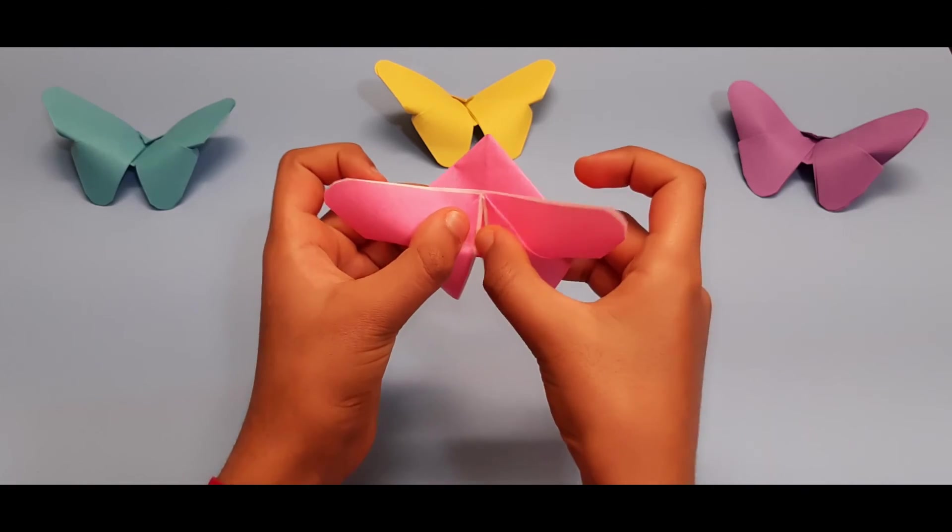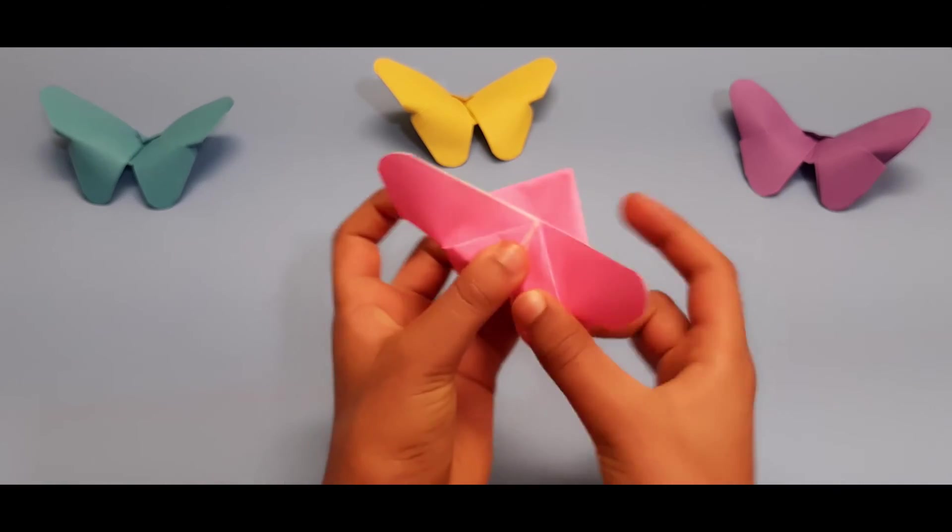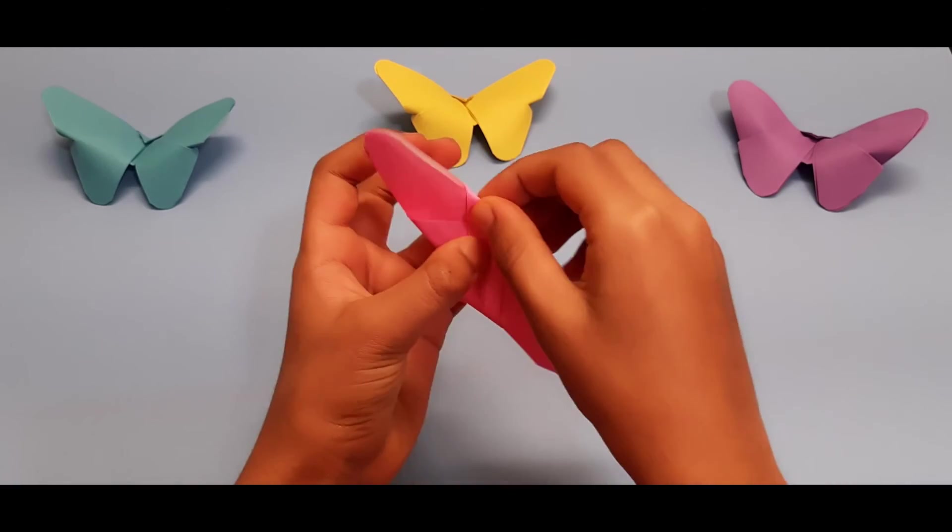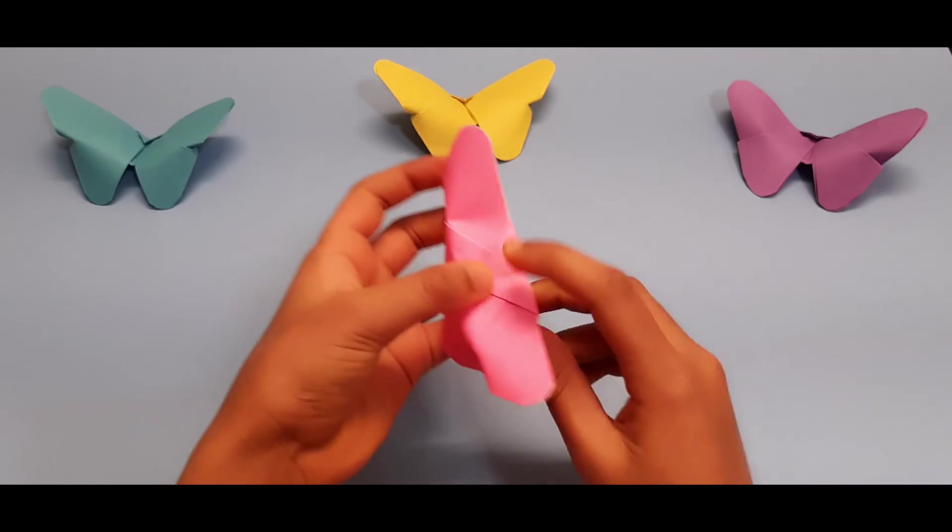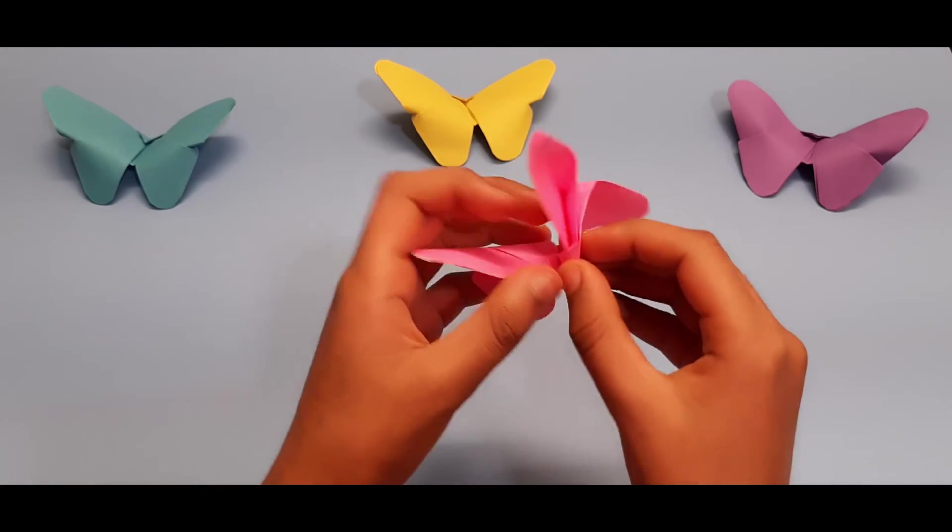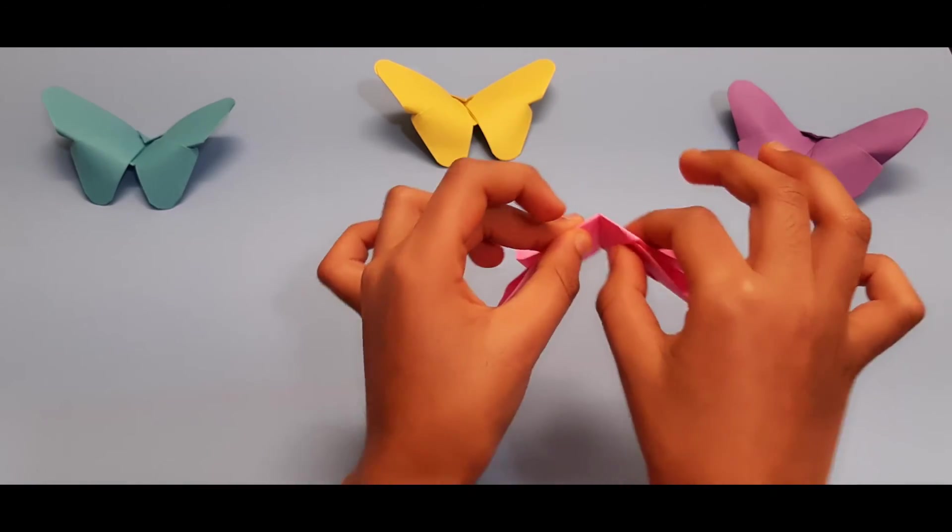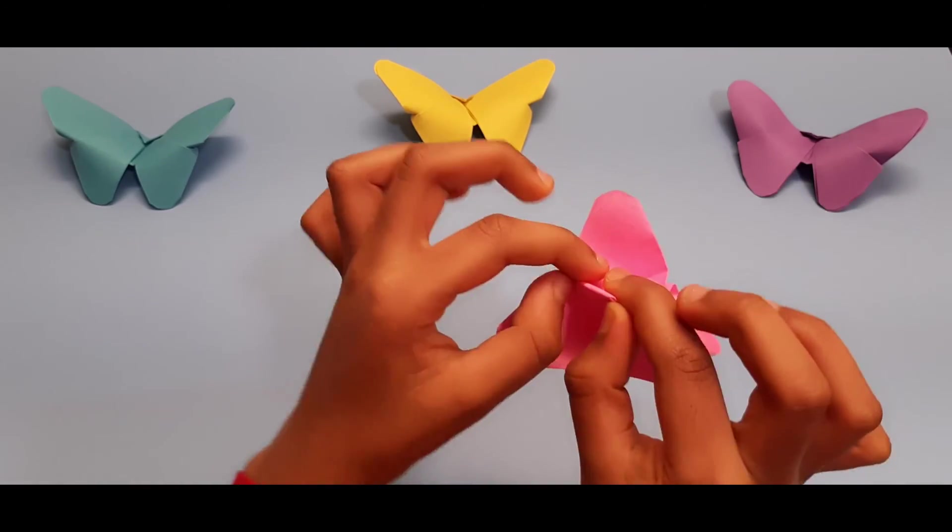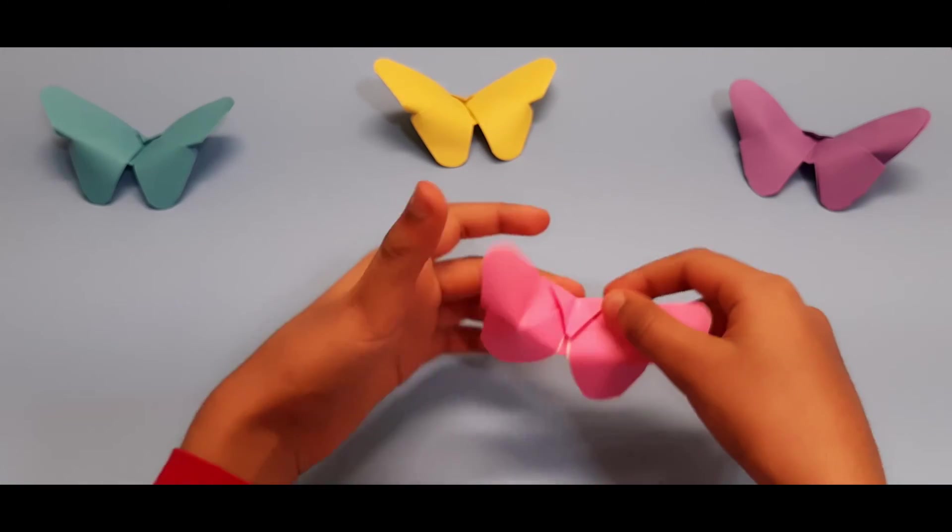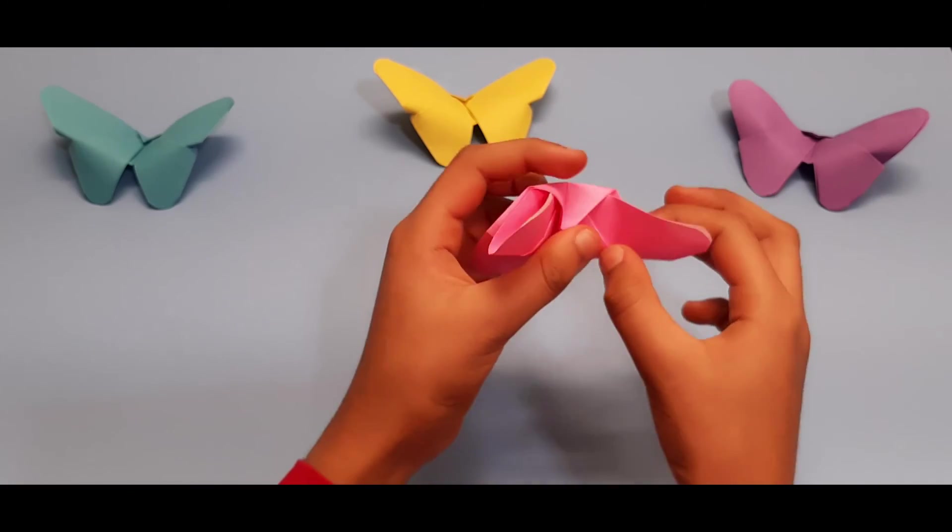Now you can take this top flap and fold it down. Next, fold along that crease just to make sure that it's right, just along the middle. Now unfold. In the places near the wings, you can put your finger in and pop it up.